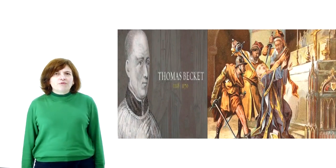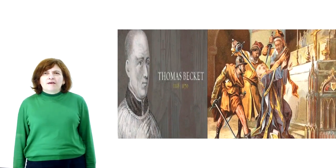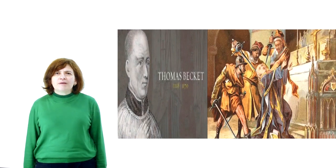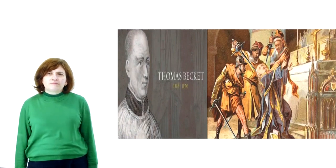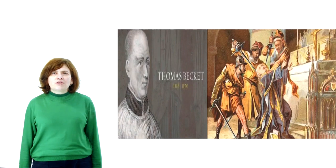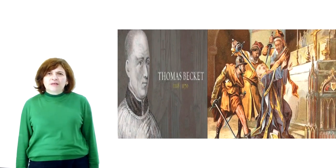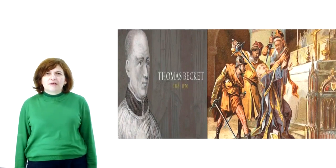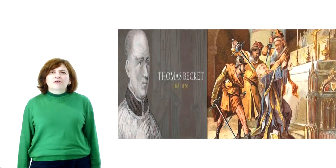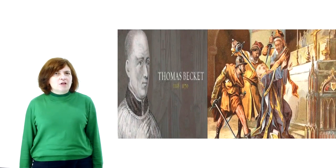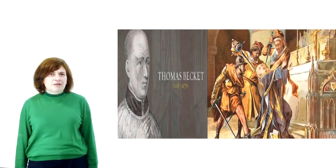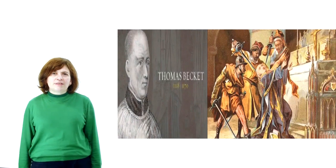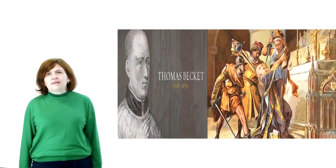Thomas refused and fled abroad. For six years there followed endless attempts to bring about a reconciliation. In July 1170, Becket returned to England. His first act was to excommunicate all the bishops who had taken part in the coronation of Henry's son as successor in Becket's absence. The king was seized with fury, crying in an unguarded moment, 'Who will rid me of this low-born priest?' In all too eager response, four knights slipped out of the room, set sail for Kent, and on the 29th of December, murdered the archbishop in his own cathedral.